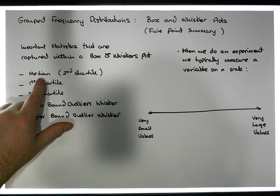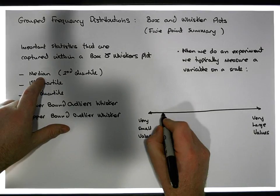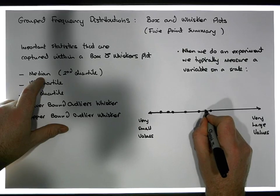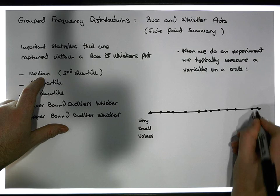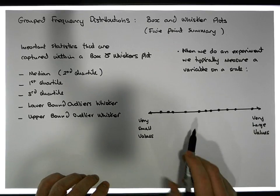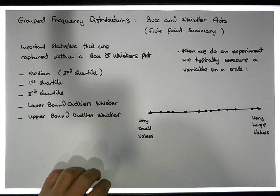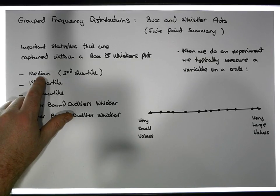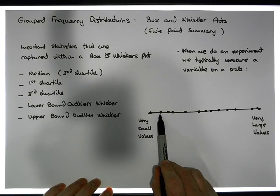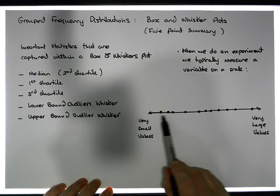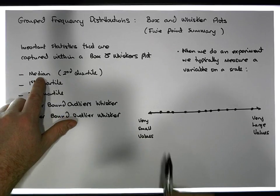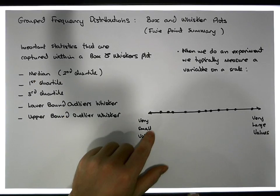The key feature of the box and whiskers plot is that the median, by definition, is the point along the scale that splits the data set into two equal portions — where we have the same number of observations less than the median as the number greater than the median. The values are ordered from smallest to largest, and the median cuts the data set in half.